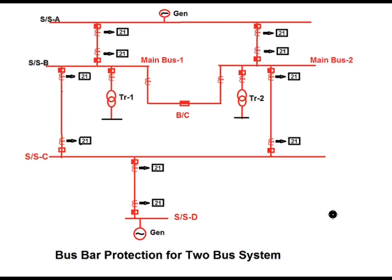Hello friends, today I will discuss about bus bar protection for a two-bus system. That is main bus 1 and main bus 2 are the two buses, and these two buses are connected via a bus coupler breaker. In this video I will discuss about bus bar protection for a two main bus system which is coupled via bus coupler breaker.